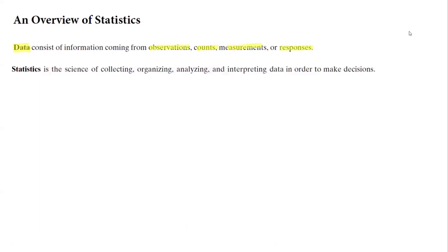Before doing that, we're going to take a look at some important terminologies. For example, what is the definition of data? Data consists of information coming from observations, counts, measurements, and responses. Statistics is a process of collecting, organizing, analyzing, and interpreting the data.